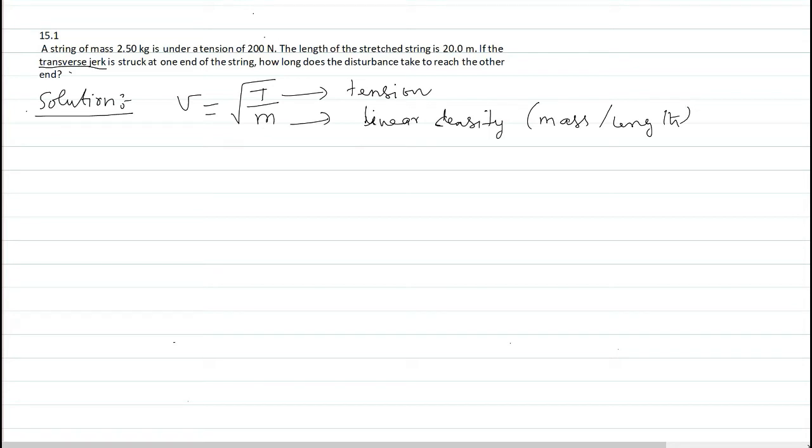Here it is given tension to be 200 newton. No problem. But linear density is not directly given. Instead, mass is given to be 2.5 kg and length is given to be 20 meter.